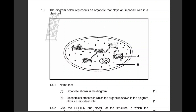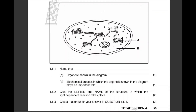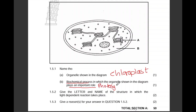Second question: the diagram below represents an organelle that plays an important role in a plant cell. Name the organelle shown — that is the chloroplast. Name the biochemical process in which this organelle plays an important role — that is photosynthesis. Give the letter and name of the structure in which the light-dependent reaction takes place.